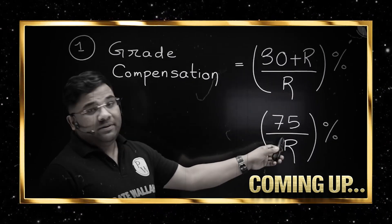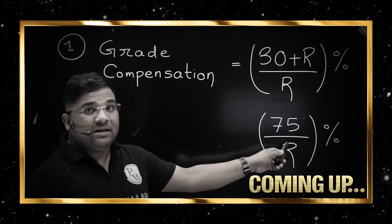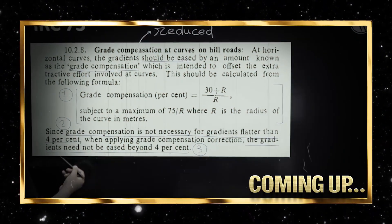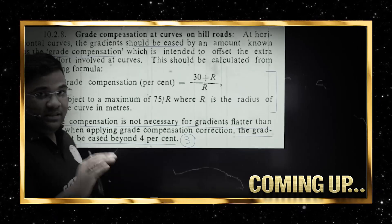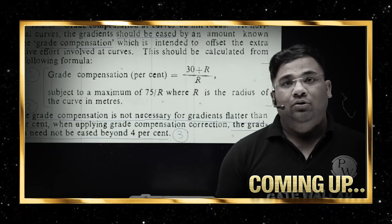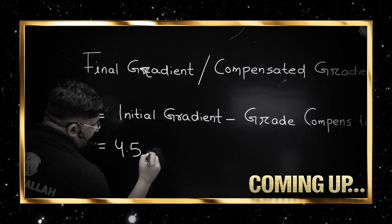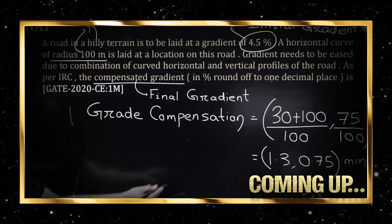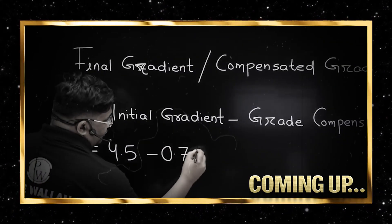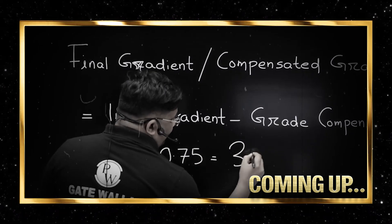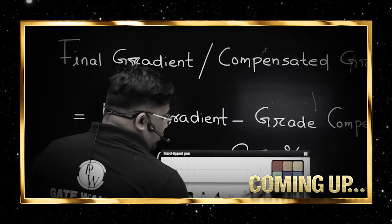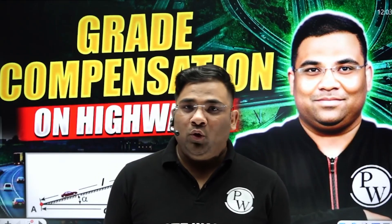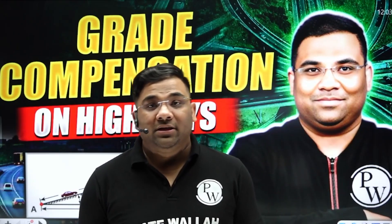This should be the grade compensation and the maximum should be this much. But is 3.75% the right answer? No, it is not the right answer. Welcome friends, welcome to this short video on grade compensation on highways.